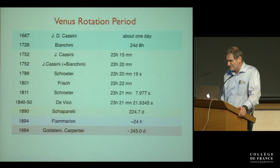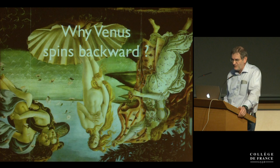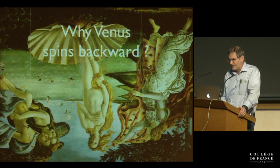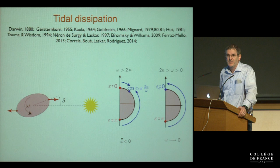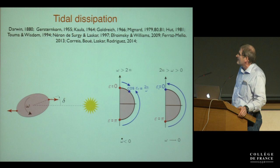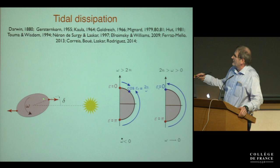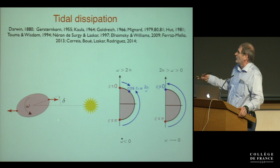Why does Venus spin backward? This was quite unexpected. To understand this behavior you need to take into account many dynamical and geophysical effects. First, tidal dissipation as introduced by Darwin: due to the non-elasticity of Venus, there is a constant lag between the tidal bulge created by the Sun and the direction of the Sun. This makes the rotation slow down.